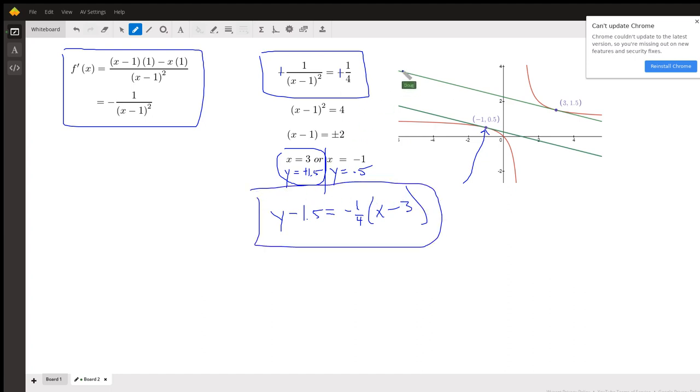So there's two lines that are tangent to the graph of the original function that are parallel. Actually, this one coincides with the line x plus 4y equals 1. There you go. Hope that helped. If you have any questions, post a comment.